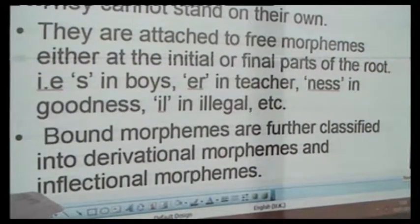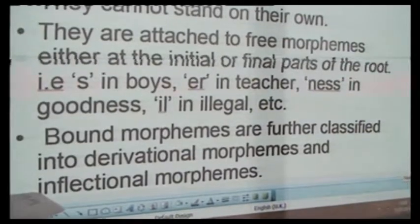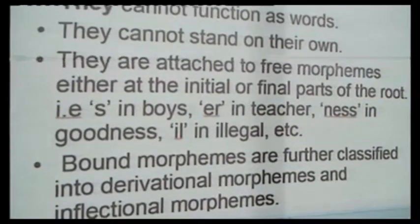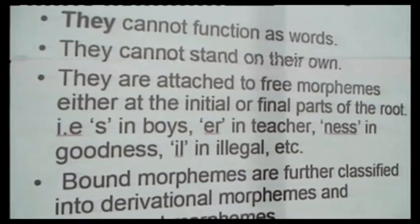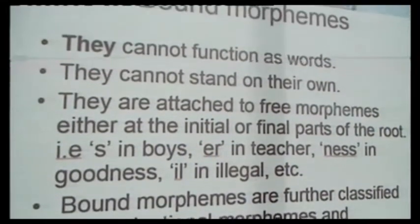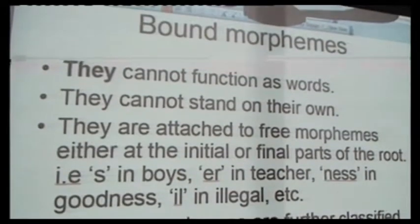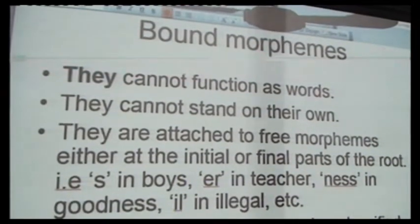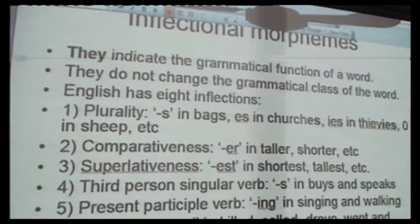Now, bound morphemes are morphemes that cannot stand on their own. They cannot function as words. They have to be attached to free morphemes in order to indicate their meaning. We have two types of bound morphemes: derivational morphemes and inflectional morphemes.